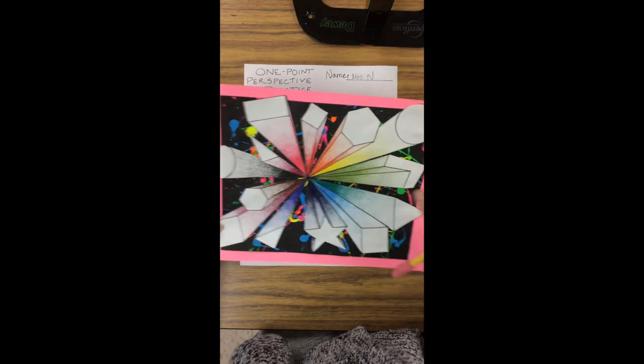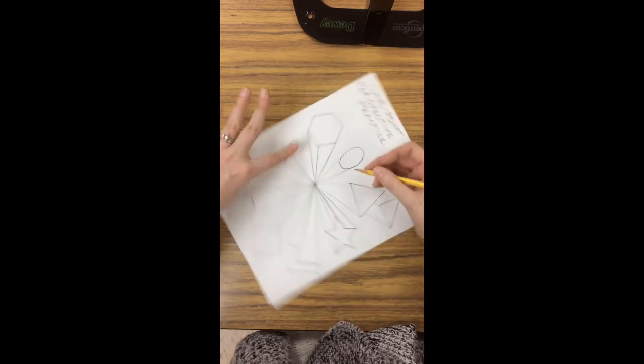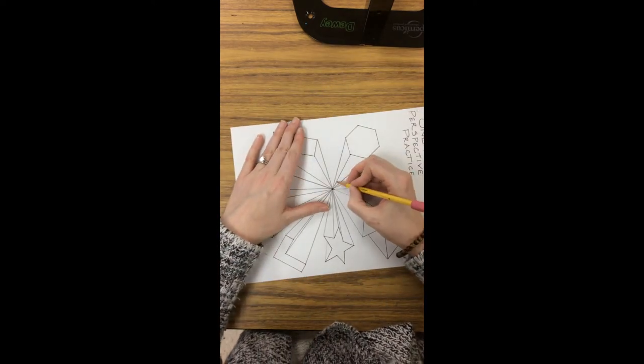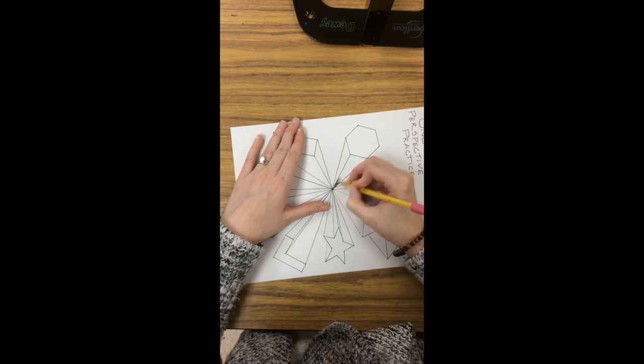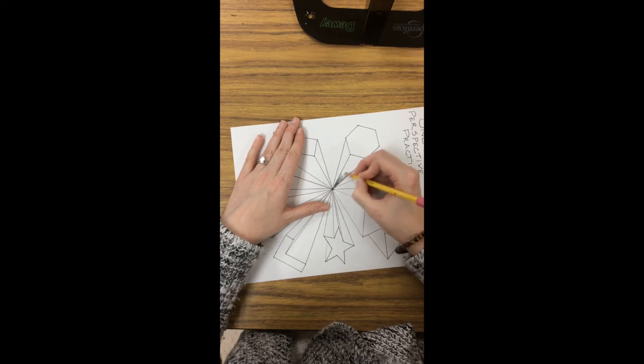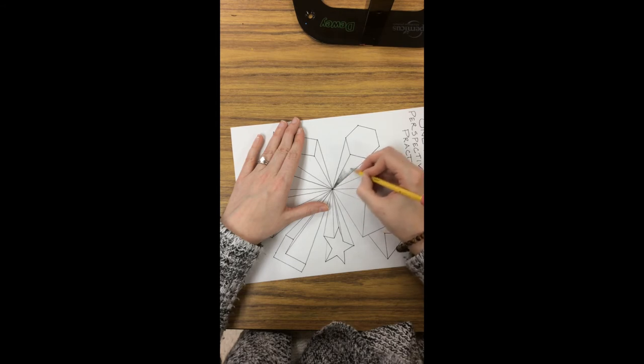So before we start this, it'd be a good idea to practice on our worksheet. So when I'm practicing, I'm going to start by pressing hard. And then I'm going to, as I go on, start pressing a little bit lighter. So we're at more of a medium value. And I just keep pressing a little bit lighter as I get closer to my shape.